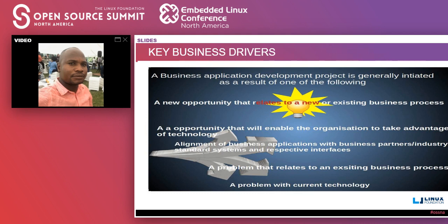The second key driver is an opportunity to enable an organization to take advantage of new technology. Like here with COVID-19, for some businesses it is an opportunity and for some it is a loss — but we need applications to facilitate that. Then we have alignment of business applications with business partners or industry standards. In highly regulated industries like health or finance, there are standards and practices which require us to be guided.